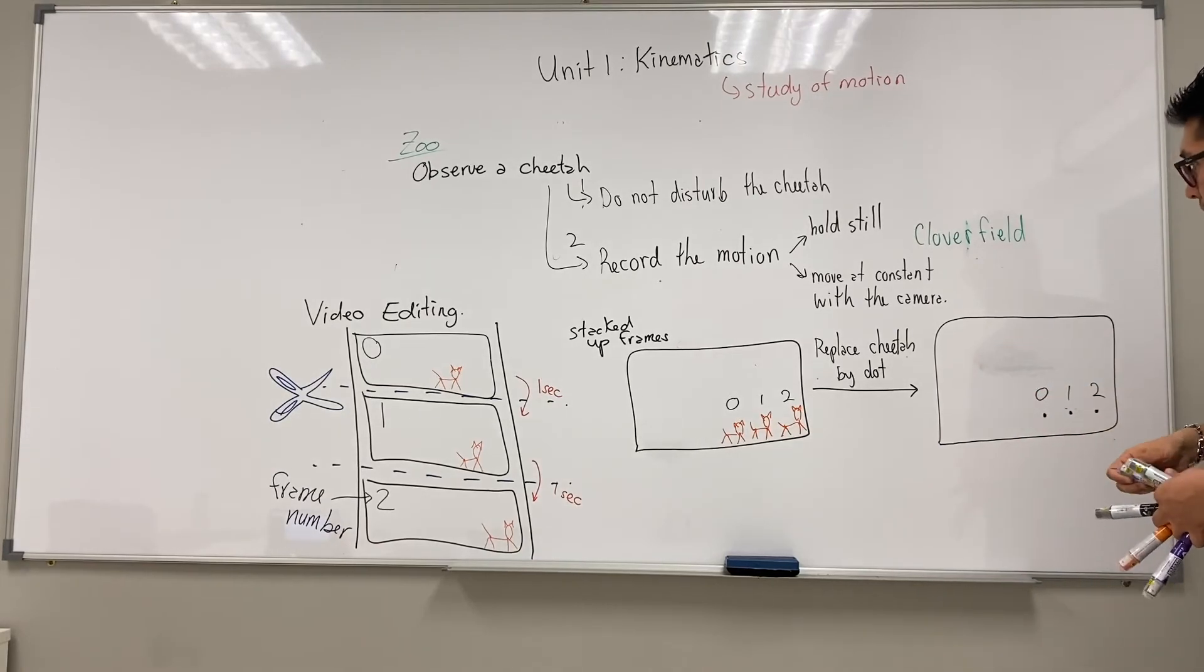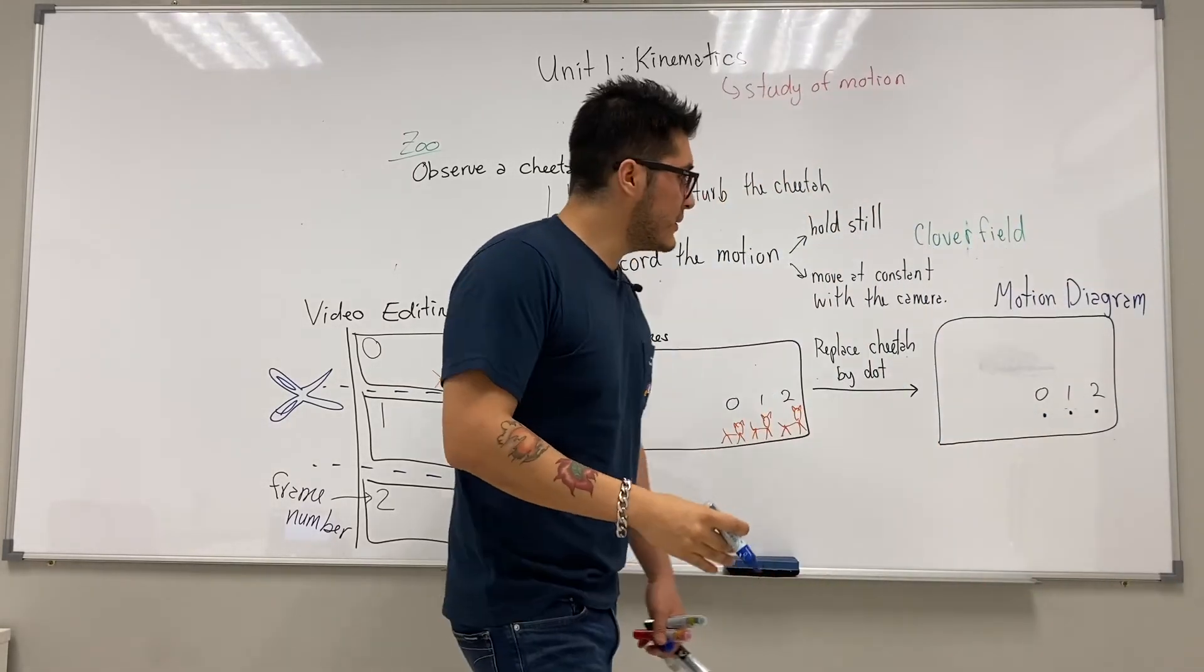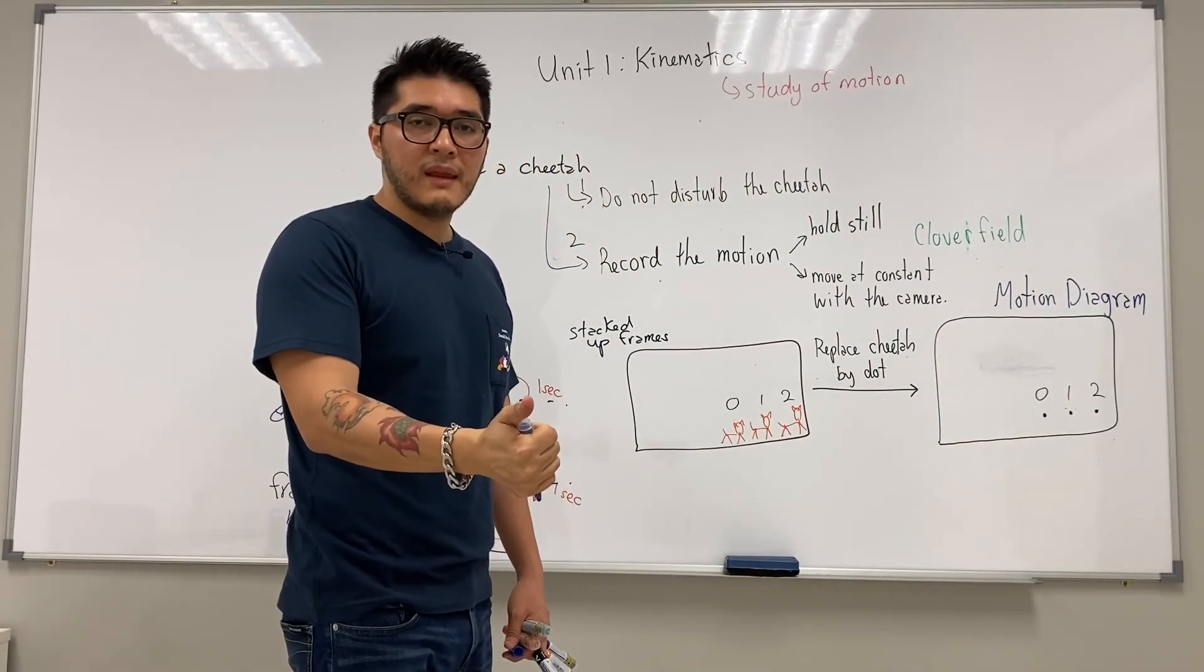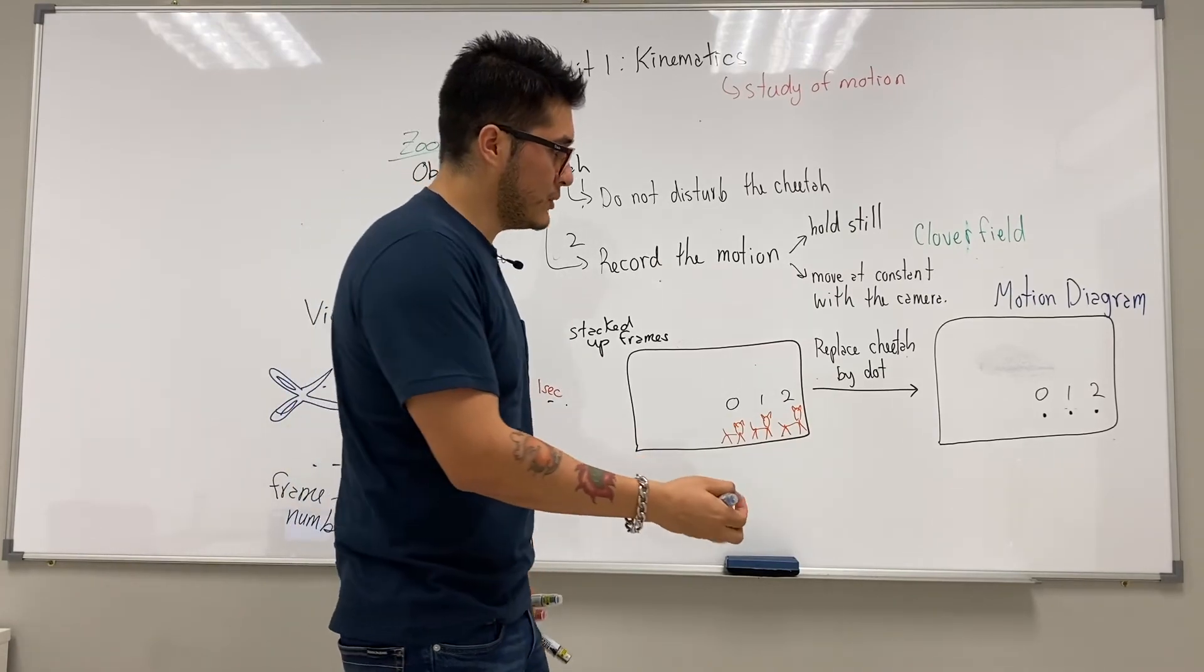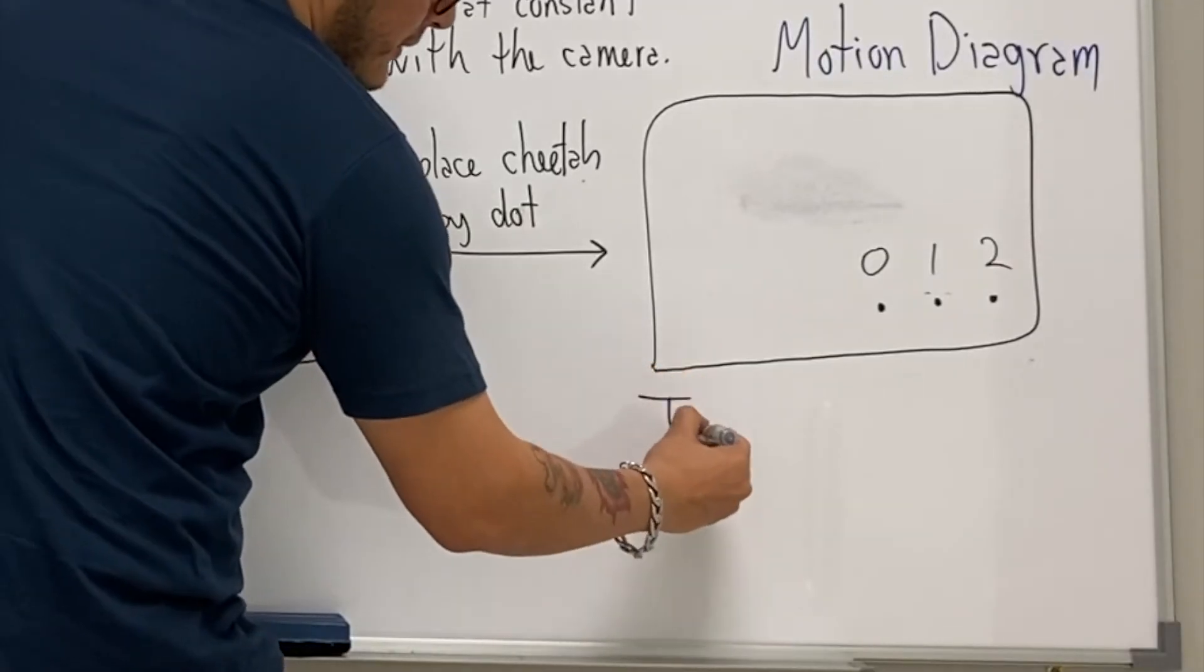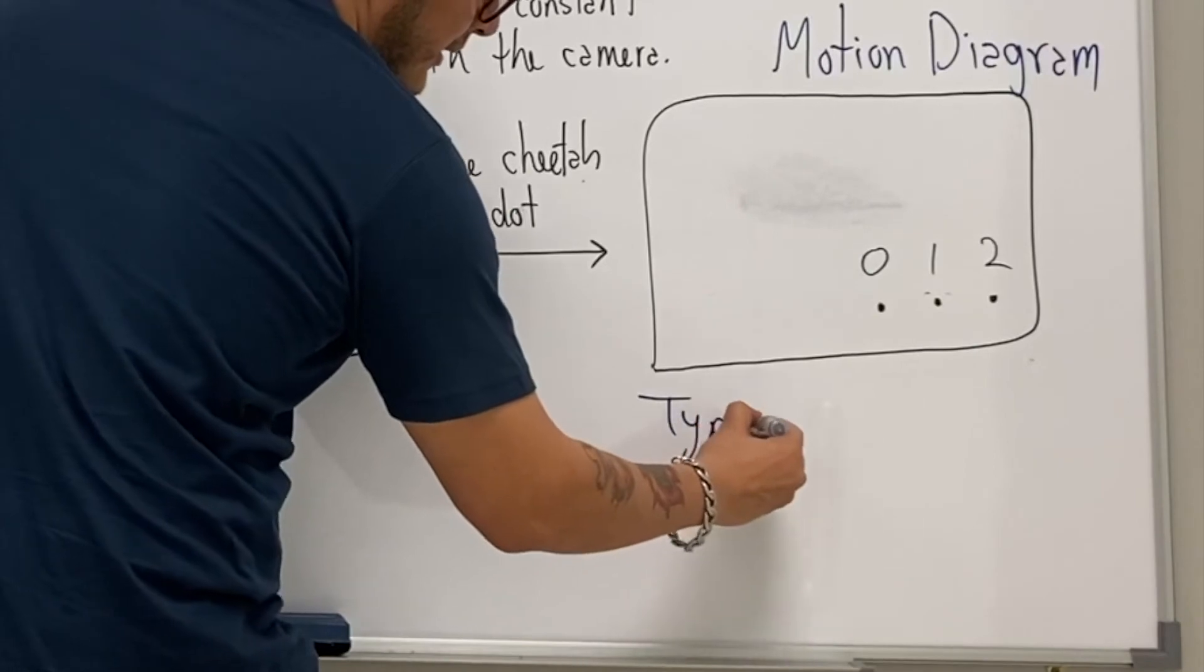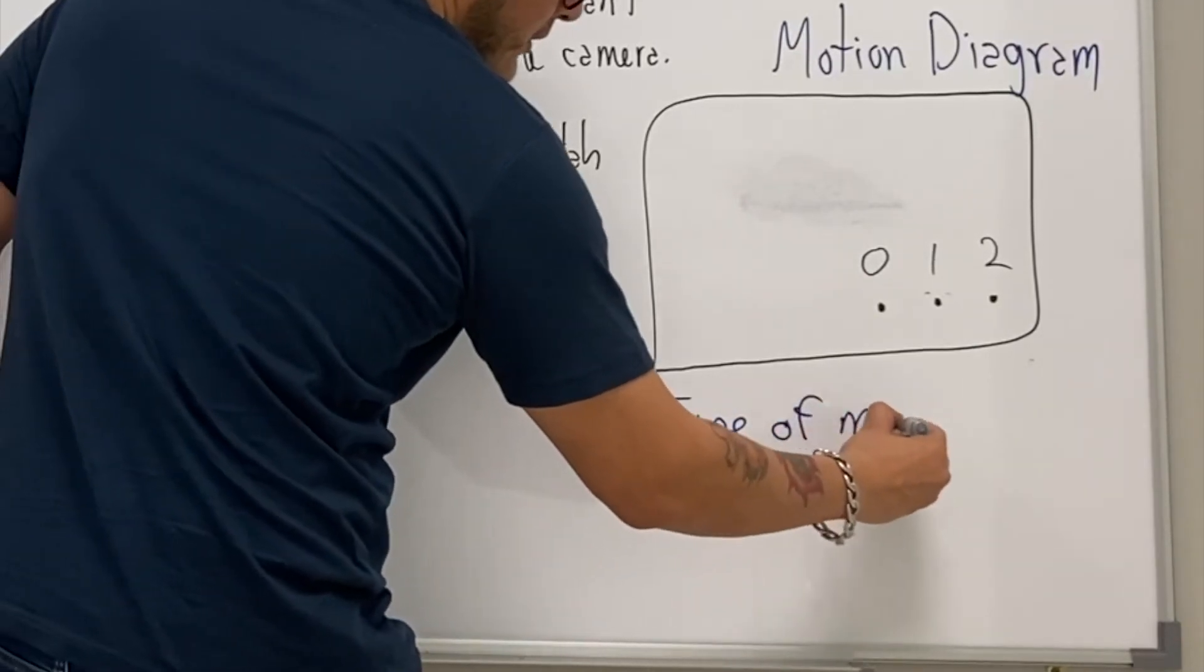So this is called a motion diagram, and what it's used to represent is the type of motion and the direction of motion. So the information that it gives us: the type of motion.